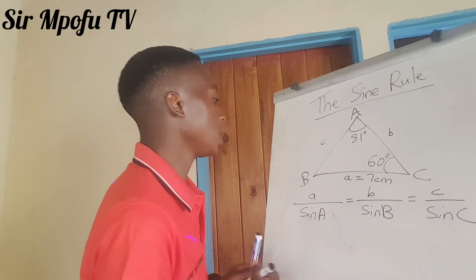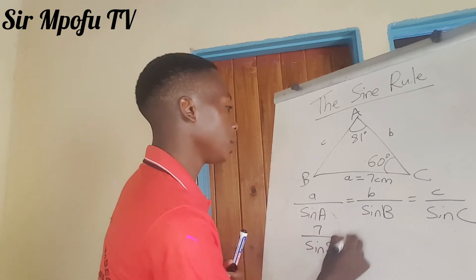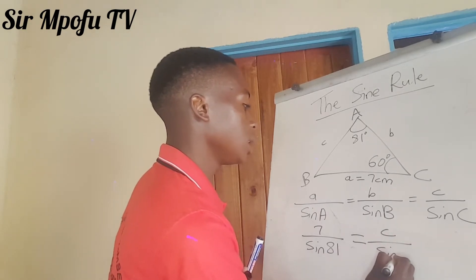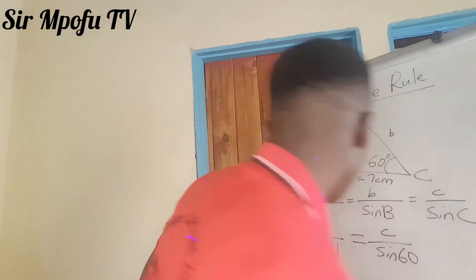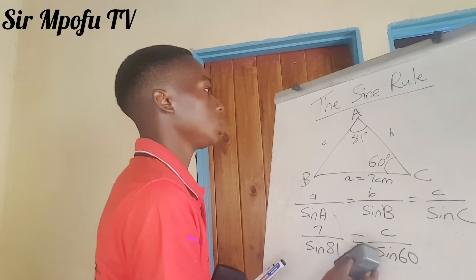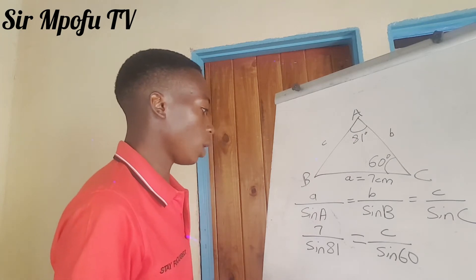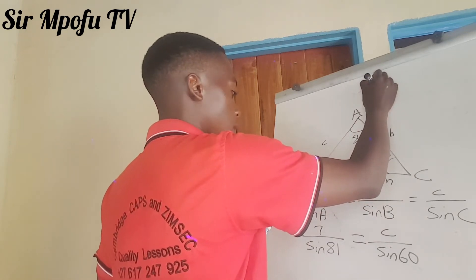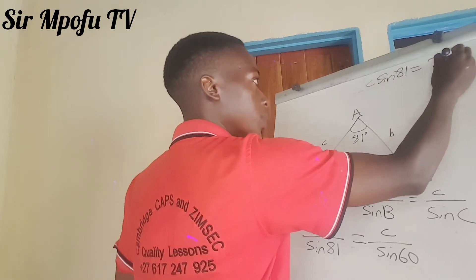So let us find what we are asked to find. Our A is 7, and sine A is sine 81, equal to our C — that is what we want to find — over sine C, which is sine 60. Then let us use the calculator. I'm going to erase here. So what we are going to do is just cross multiply, and we get C times sine 81 equals 7 times sine 60.